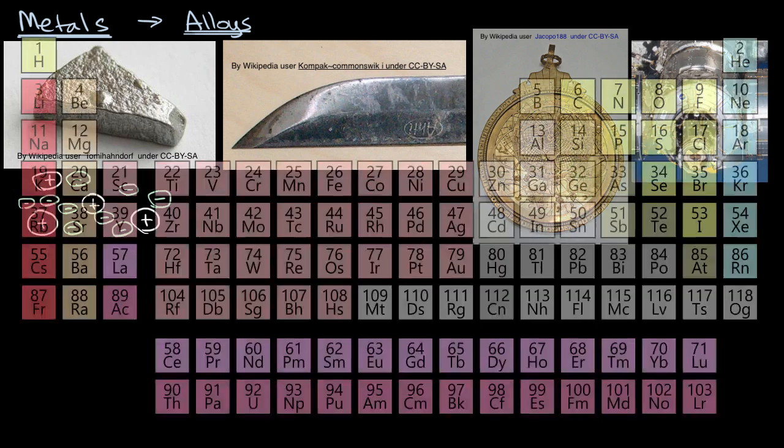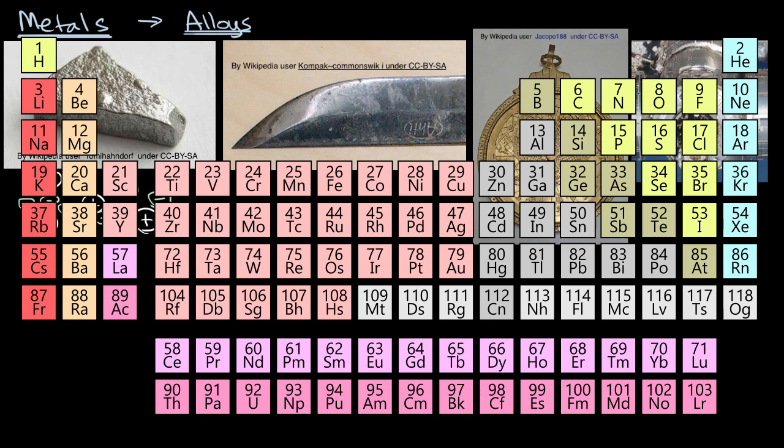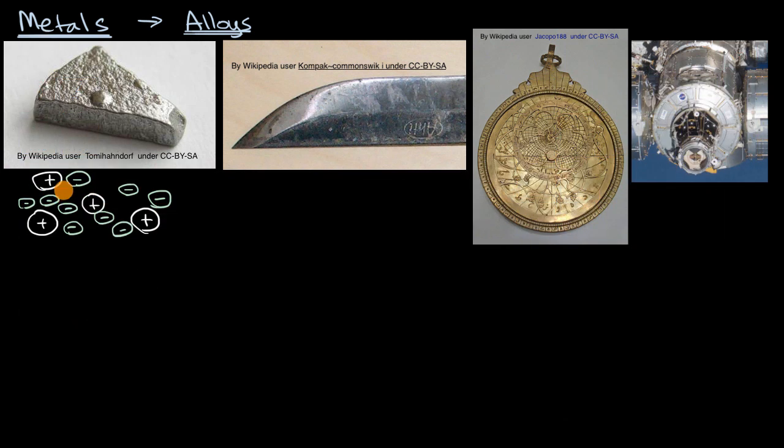And depending on the metal, if you're talking about a group one metal, you can imagine that the charge of these ions right over here would be a plus one. But if you're talking about a group two metal, or a transition metal, they have more valence electrons that they might be able to contribute to this pool. And so, if you're thinking about these ions, they could even have a positive two charge, or a positive three charge.